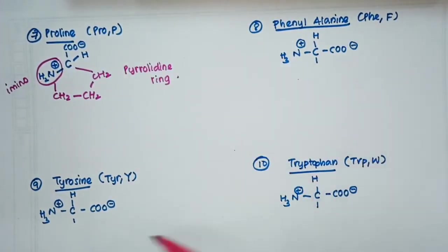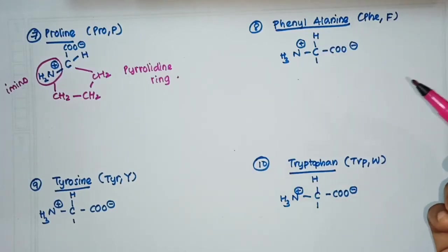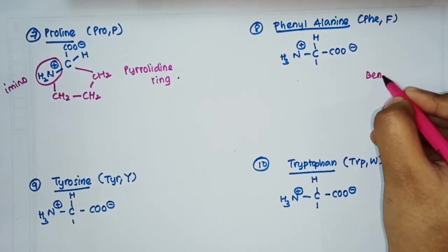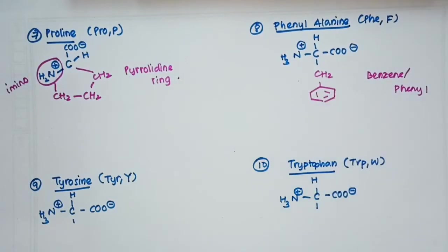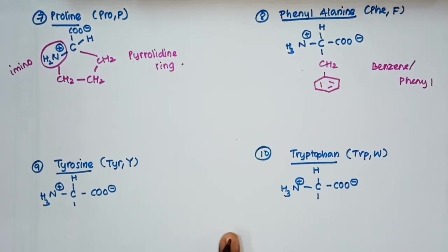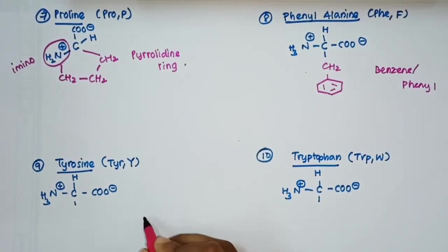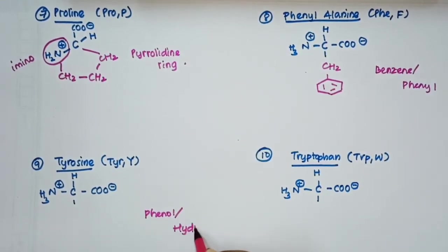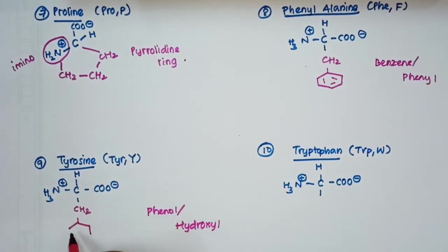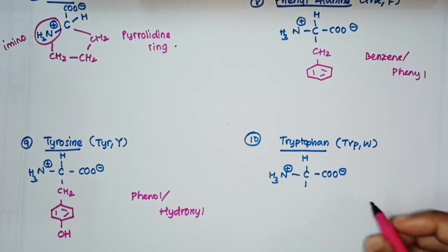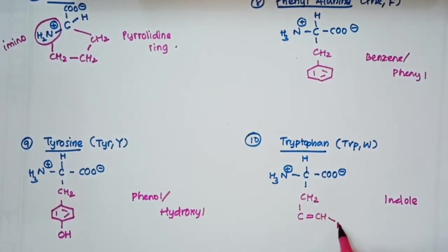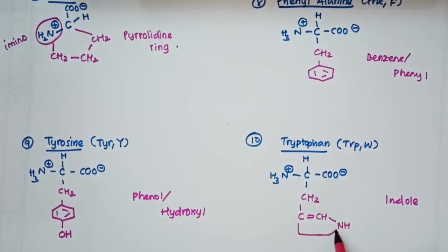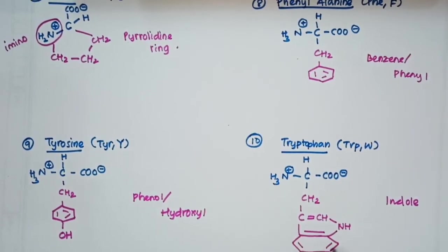The next three are aromatic amino acids. Phenylalanine has a benzene or phenyl group as its R group. The ninth amino acid is tyrosine, which is also aromatic and has a phenol group — you just add a hydroxyl group to phenylalanine to get tyrosine. The tenth is tryptophan, which has an indole group as its R group.